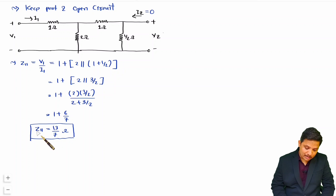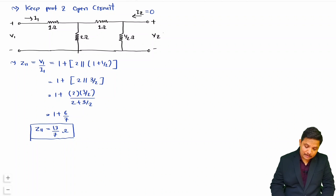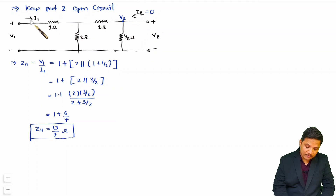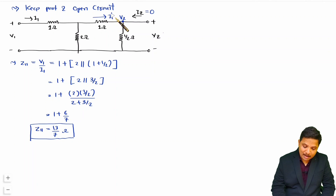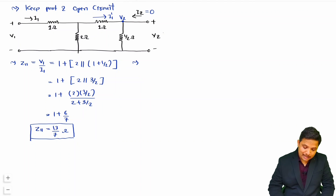Now we have the value of Z11. Next we want V2 by I1, which is Z12. Since I2 is 0 here, I can identify voltage V2. To find V2 in terms of I1, I can calculate the current passing through that branch. Let that current be I1 dash. Once I have I1 dash, then V2 equals I1 dash into the half-ohm resistance. So let us find I1 dash first.